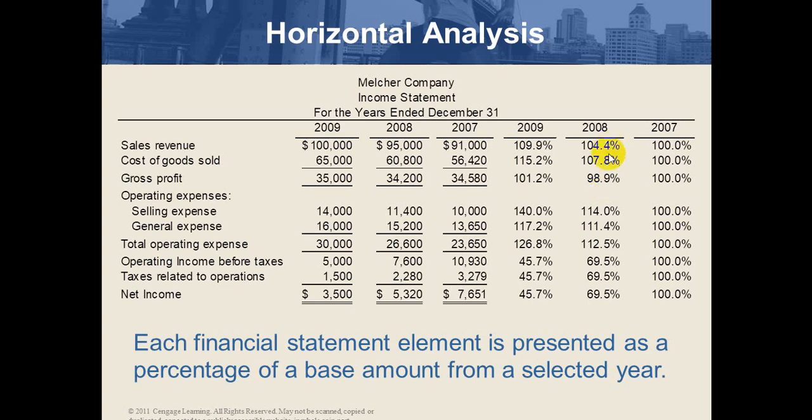There is no direct arithmetic relation between the percentage changes of sales and cost of goods sold and the resulting gross profit percentage, because the denominator in each equation differs. If the base year amount is large, the percentage will be lower; if it is small, the percentage will be higher. This is one of the disadvantages of horizontal analysis — it gives indicators only.